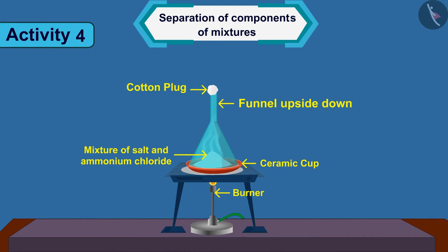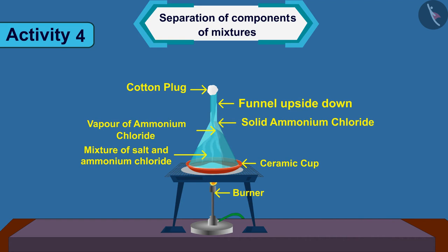What do you see? As the cup is heated, the vapour of ammonium chloride rises upwards from the cup and after some time, this vapour starts to settle on the cool surface of the funnel. Keep the ceramic cup warm until the vapour stops coming out of it. Now, turn off the burner and scratch out the solid ammonium chloride in a bowl.